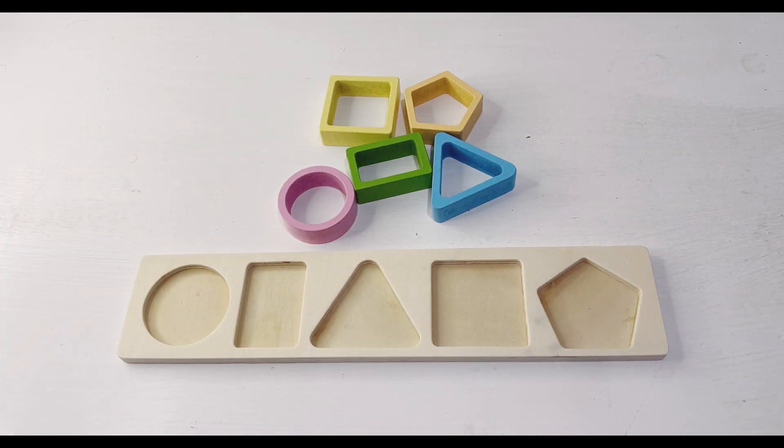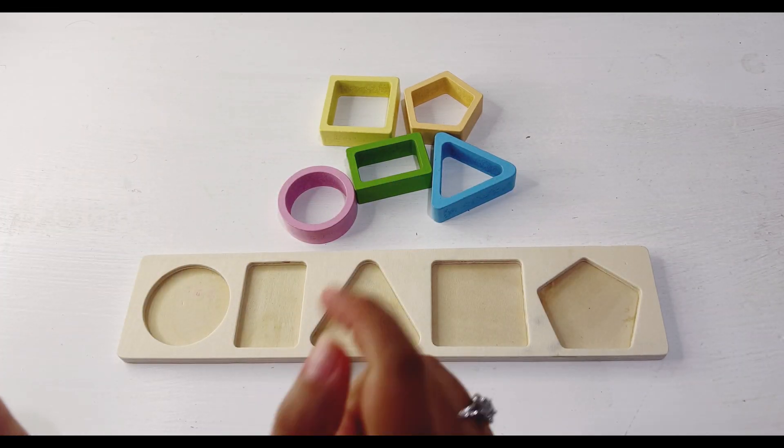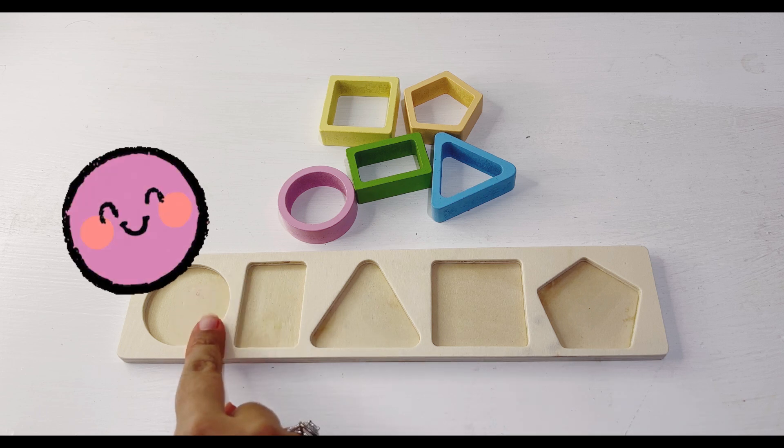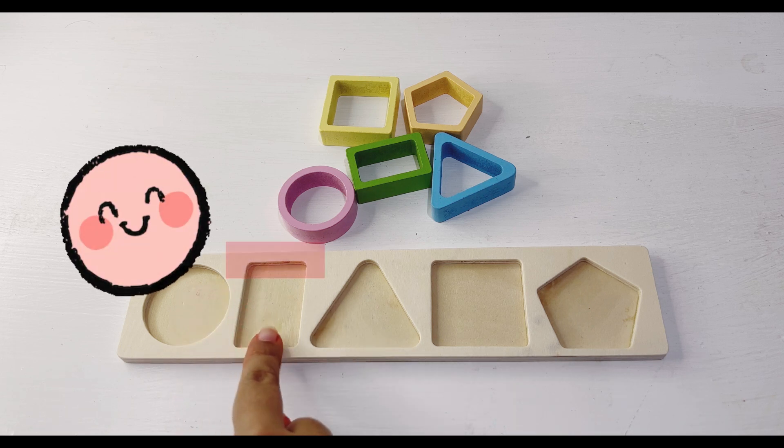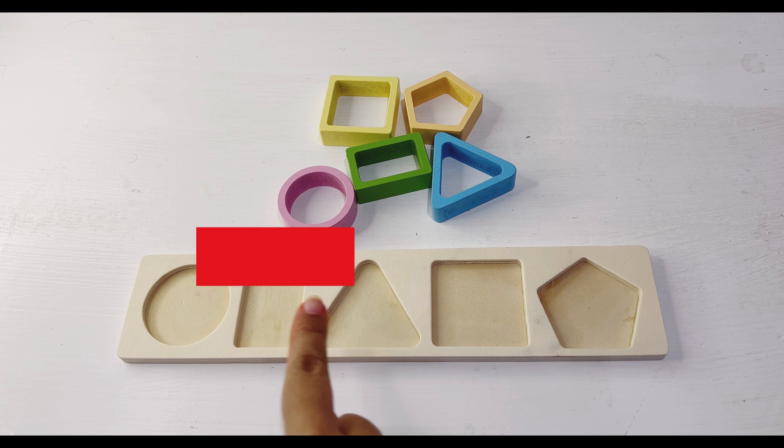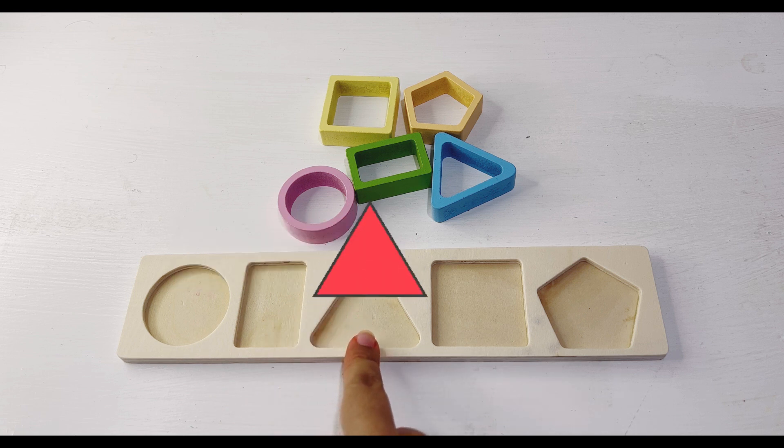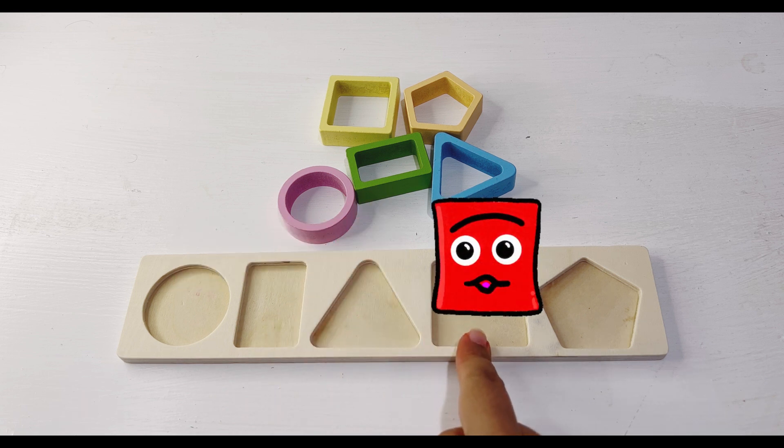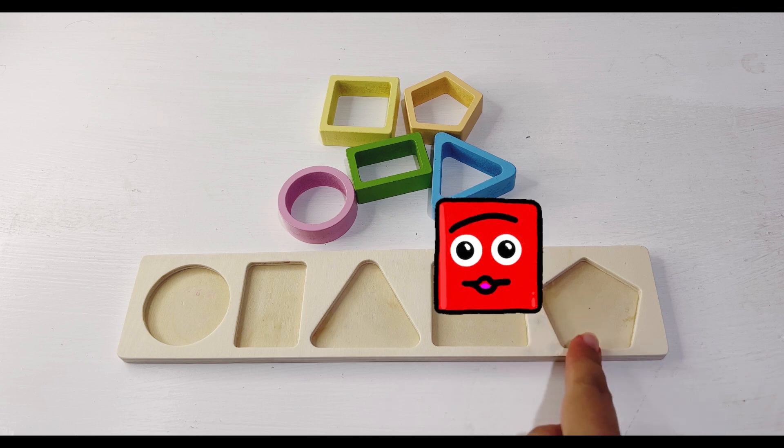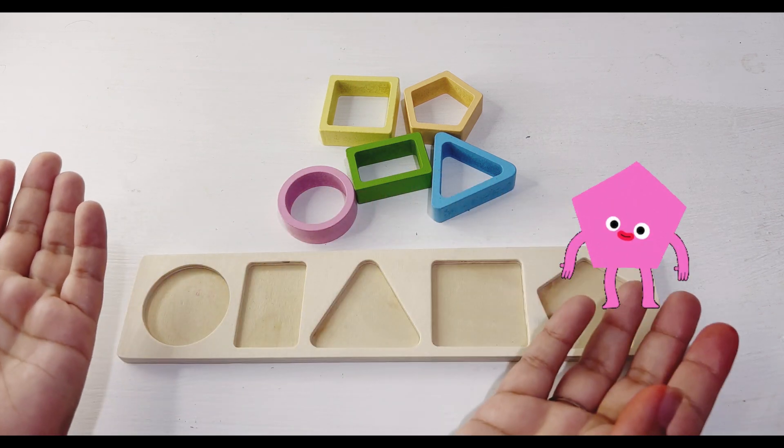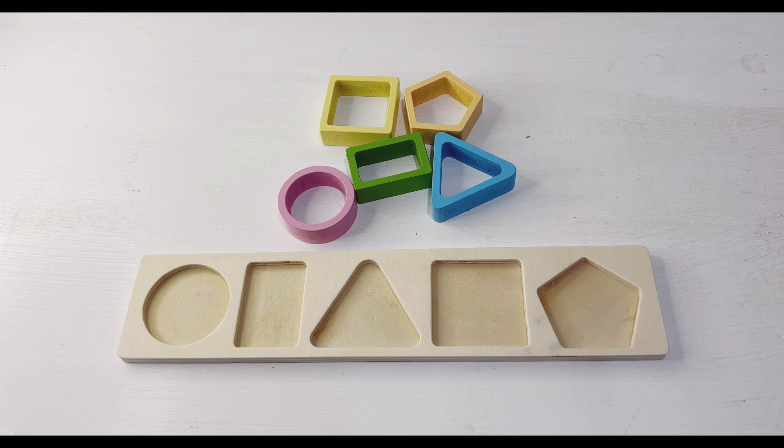Hello guys, in this video we will sort shapes and put them in the correct place on the board. First we have circle, rectangle, triangle, square, and pentagon. We will start with our first shape.